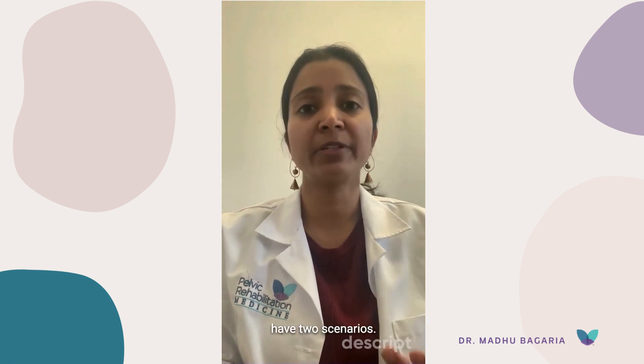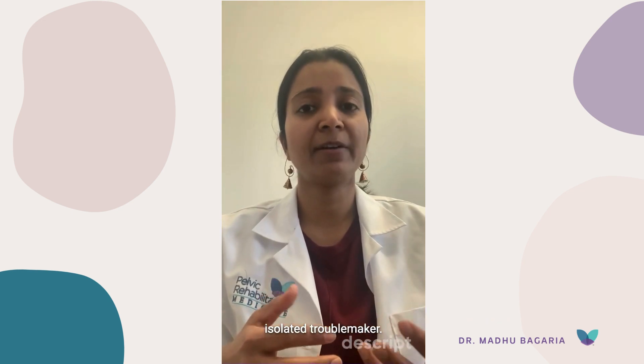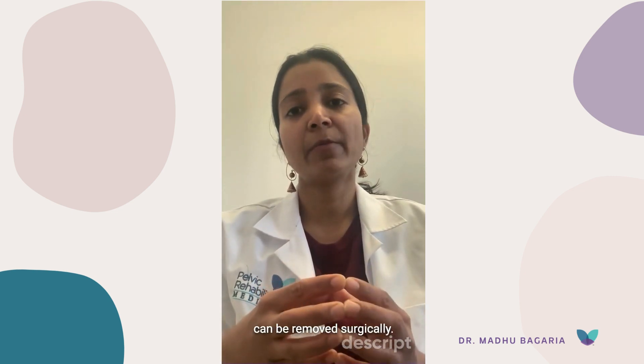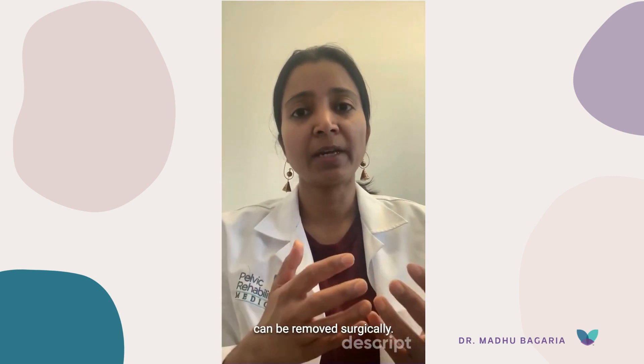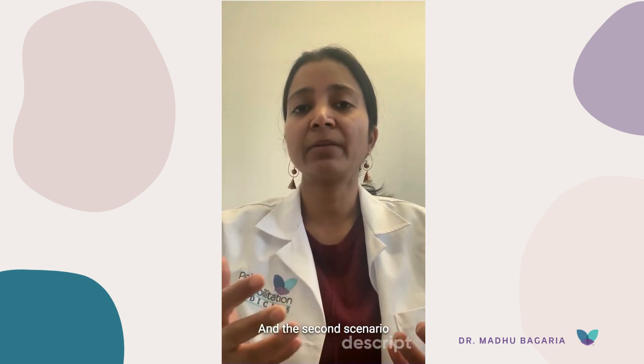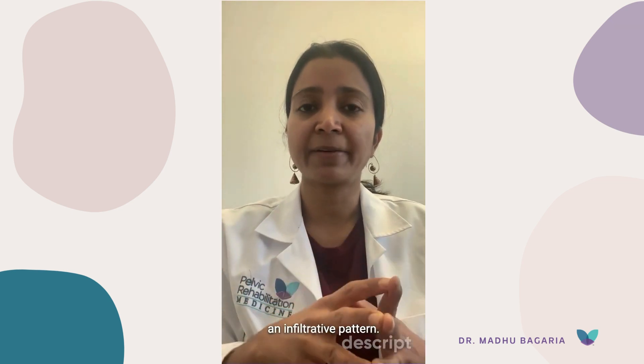In this case we have two scenarios. One is a focal disease — think of it as an isolated troublemaker. They form a focal concentration of the disease and can form an adenomyoma, and this can be removed surgically, just like we remove fibroids from the uterus. The second scenario is when it is microscopic invaders all through the muscle wall of the uterus, and it is called an infiltrative pattern.